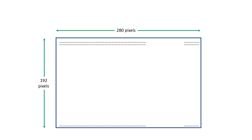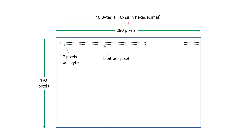The image in high-res graphics mode is basically stored as a bitmap. The image is 280 pixels wide and it's stored as 7 pixels per byte, so each line consists of 40 bytes of information.